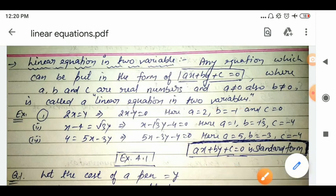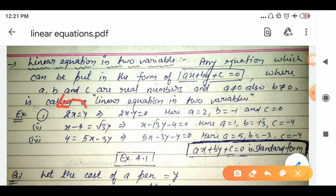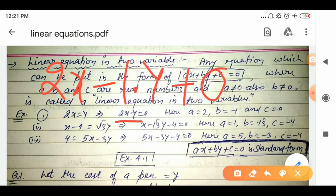The standard form of linear equation in two variables is: ax + by + c = 0. Now let's look at examples. First example: 2x = y. In this we transpose y to the left-hand side. By the rule of transposition, a positive term becomes negative when transposed. So transposing y gives us 2x − y = 0.